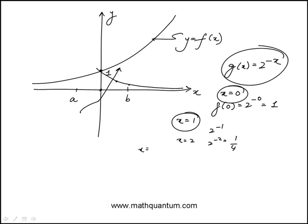Now if you go on the other side, for example when x is minus 2, this would be 2 to the minus minus 2, which is 2 to the 2, or 4. So its value would actually increase. It would look something like this.